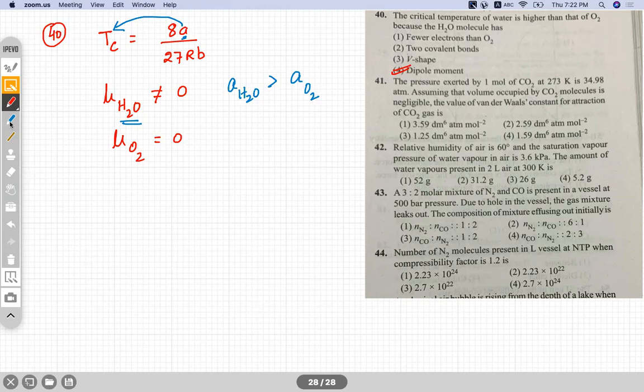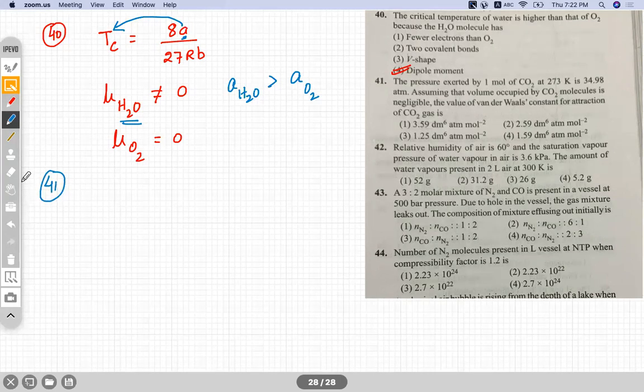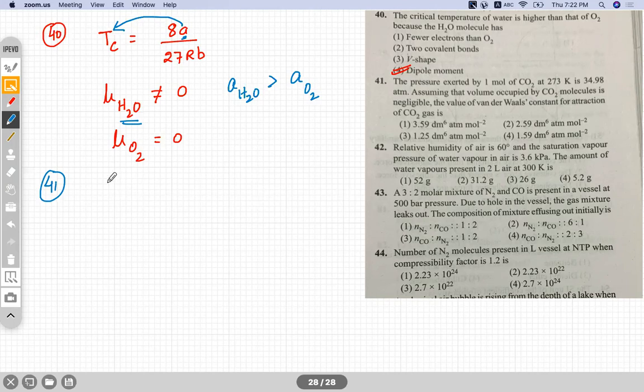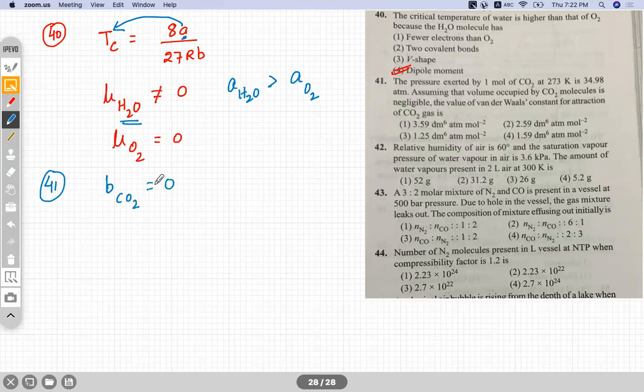Question number 41. The pressure exerted by one mole of CO2 is given, assuming that the volume occupied by CO2 molecule is negligible. Since the volume occupied is negligible, we know B is for the volume of gaseous molecule, so B is zero given in this question. You need to find out A, the Van der Waals constant for attraction.